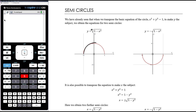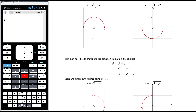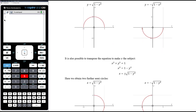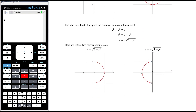The positive square root of 1 minus x squared is the top half of the circle, and the negative square root — if you think about transformations, that's just going to be reflected in the x-axis — so it's the bottom half of the semicircle. We could also rearrange to make x the subject and get two separate equations: x equals plus or minus the square root of 1 minus y squared, giving us two further semicircles.